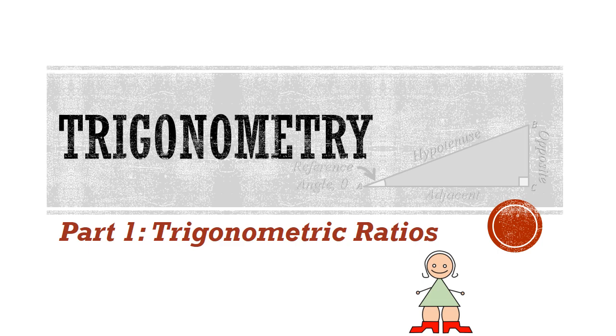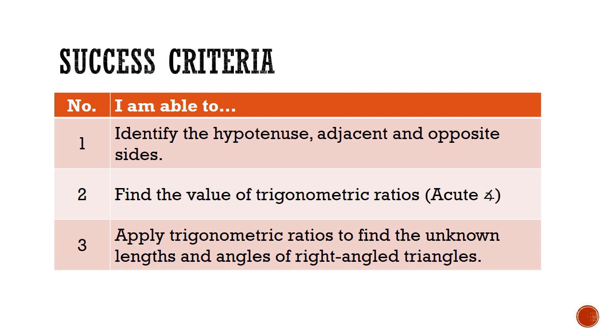We will be following the O-level EMAT syllabus for the first arc of this series. The success criteria for today will be for students to be able to identify the hypotenuse, adjacent, and opposite sides of a right-angled triangle, find the basic trigonometric ratios, mainly sine, cosine, and tangent for acute angles, and then apply these ratios to find unknown lengths and angles of right-angled triangles.